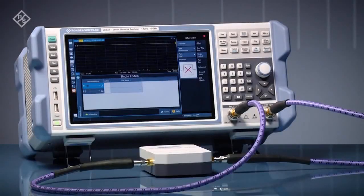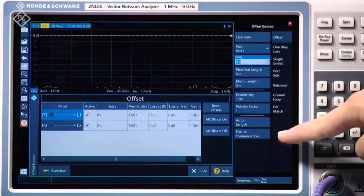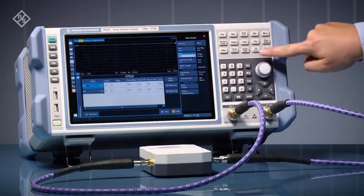The Rohde & Schwarz ZNLE Vector Network Analyzer offers many useful functions, such as de-embedding, fixture compensation, and the use of calibration units.